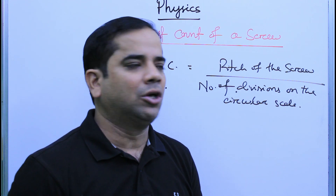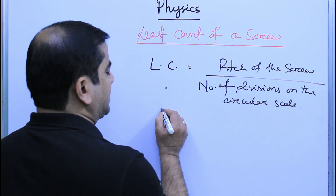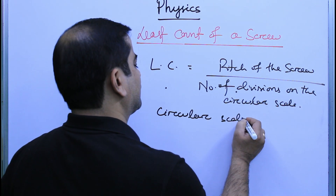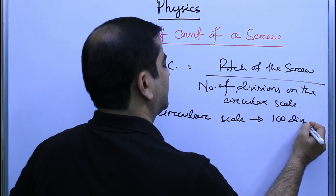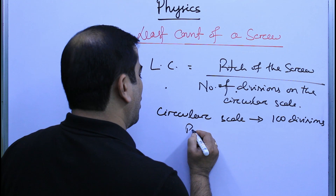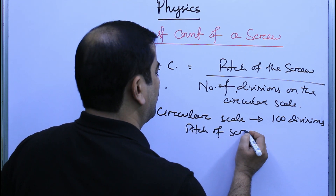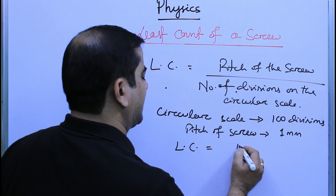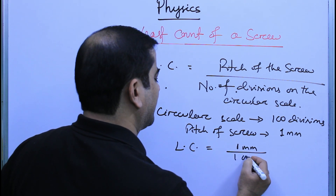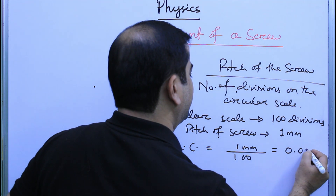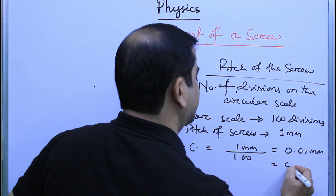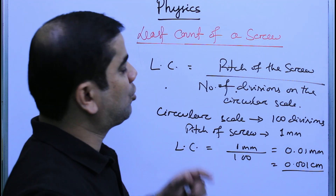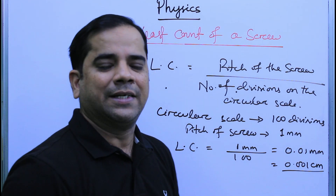In general, the circular scale has 100 divisions or 50 divisions. If the circular scale has 100 divisions and the pitch of the screw is 1 millimeter, then the least count equals 1 millimeter divided by 100, which equals 0.01 millimeter, or 0.001 centimeter. So in general, the least count of a screw is 0.001 centimeter.